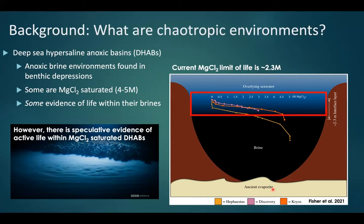Within this interface layer — shown in this figure of a basic DHAB — an ancient evaporite dissolves, forming a brine that collects in a benthic depression. There is a two to three meter interface layer with an extremely steep chemocline going from zero molar all the way up to five molar magnesium chloride within the brine end member. The current magnesium chloride limit of life is around 2.3 molar.